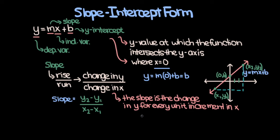To illustrate this, let's take the line y equals 2x plus 1 and make a table to find some points. We'll choose x values of negative 1, 0, and 1. When x is negative 1, y is 2 times negative 1 plus 1, which is negative 1. When x is 0, y is 2 times 0 plus 1, so 1. And when x is 1, y is 2 times 1 plus 1, so 3.